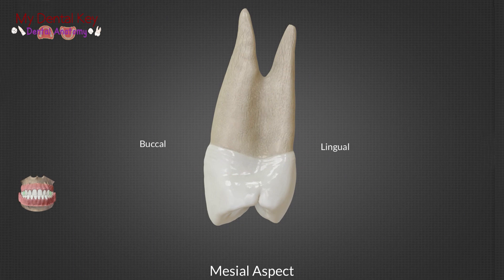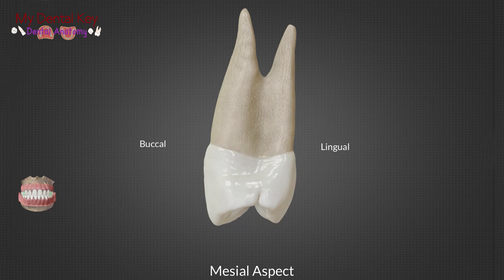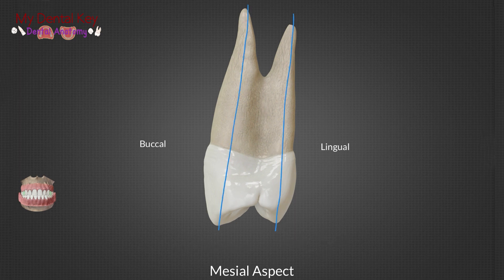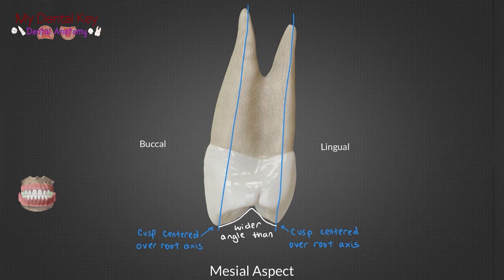Moving on to the mesial aspect, we can see how the tooth has a trapezoidal shape and is very constricted around the CEJ. Take note of the cusp heights — the buccal cusp is slightly taller than the lingual cusp. The cusps are also centered above their respective root axis and within the confines of the root trunk. Generally, maxillary premolar cusps have a larger angle between the cusps than mandibular premolar cusps.